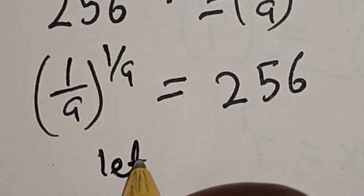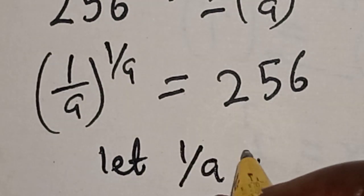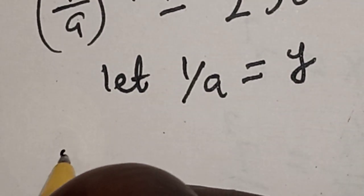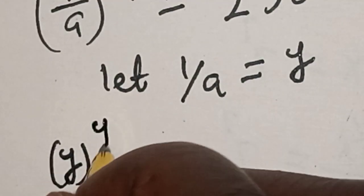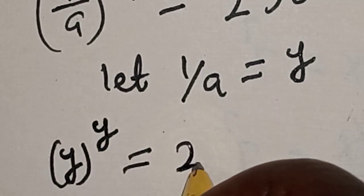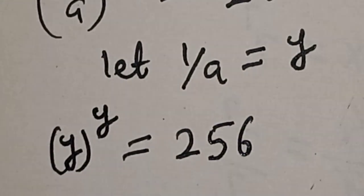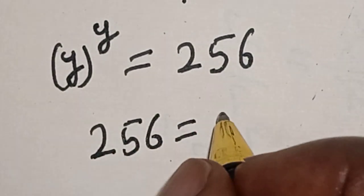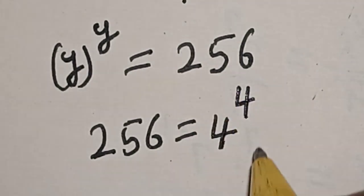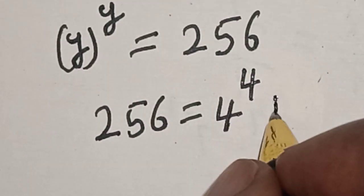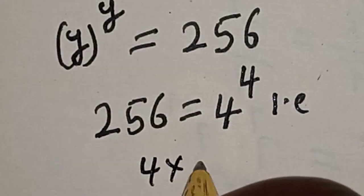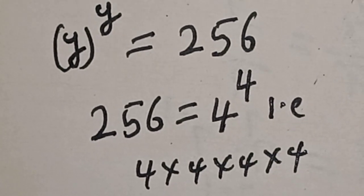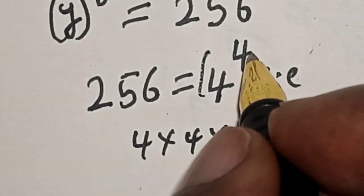Now let 1 over a equal y. We have y raised to the power of y is equal to 256. We should know that 256 is equal to 4 raised to power 4 — that is 4 times 4 times 4 times 4. Now let's substitute this.